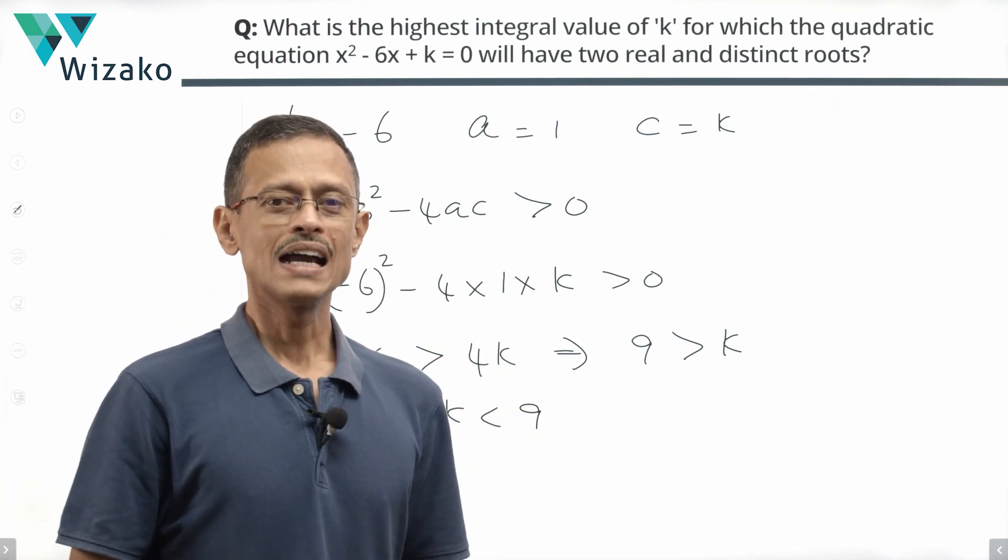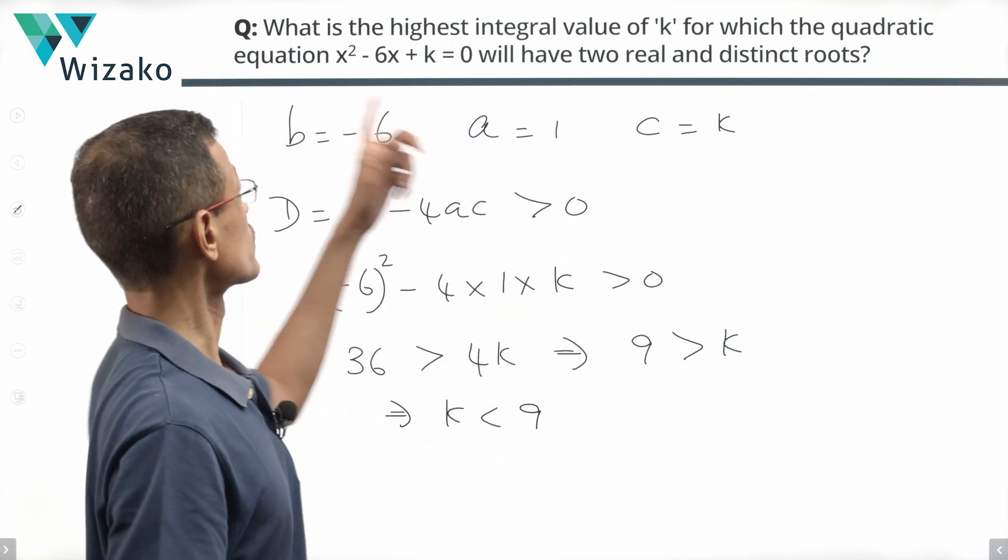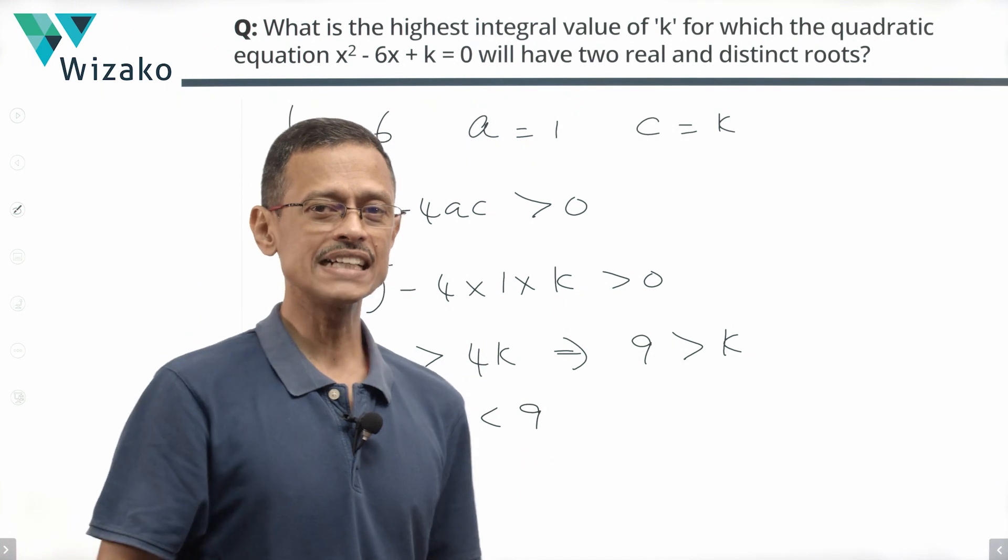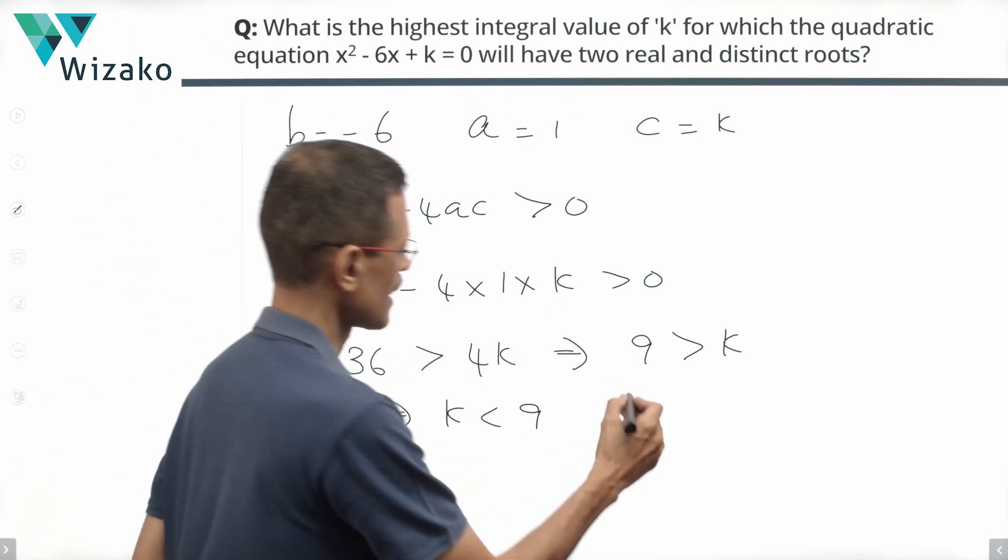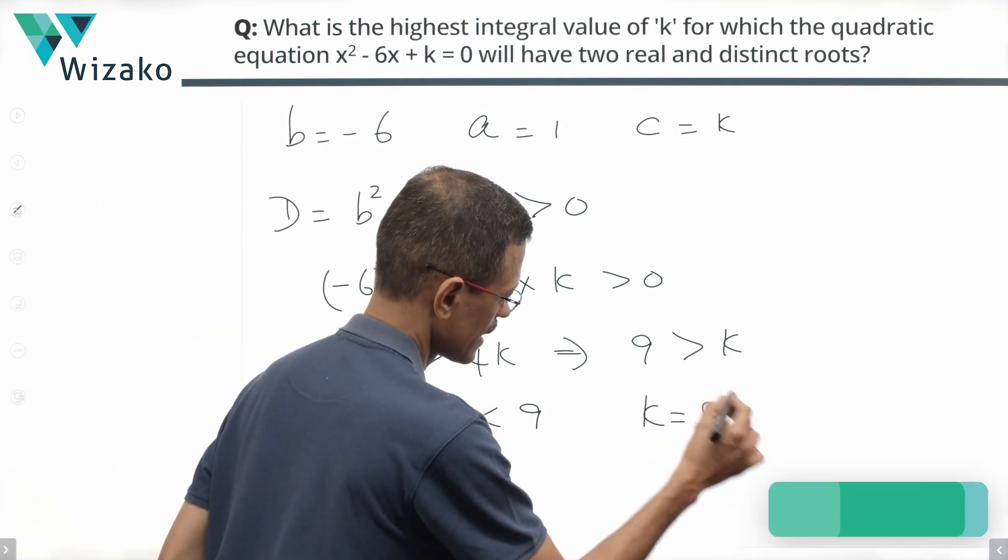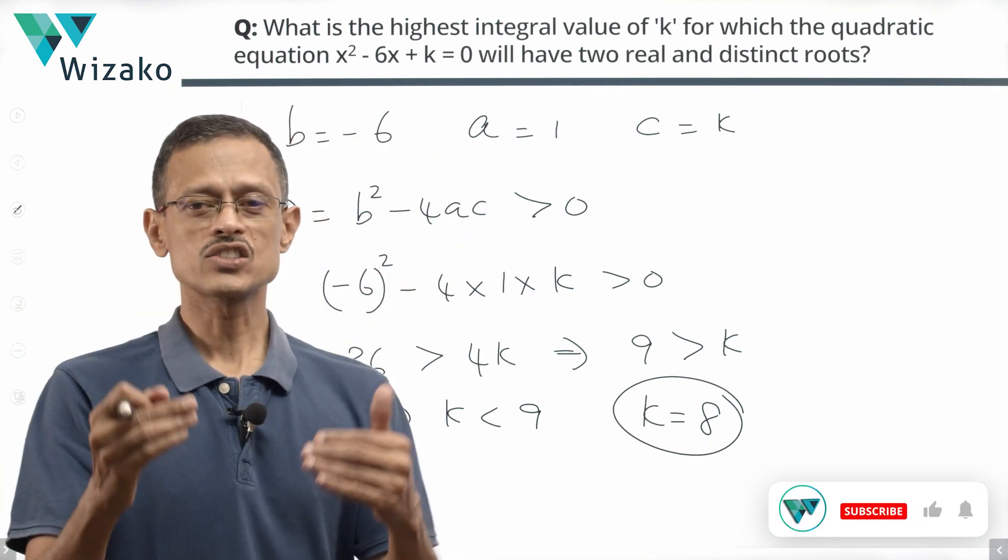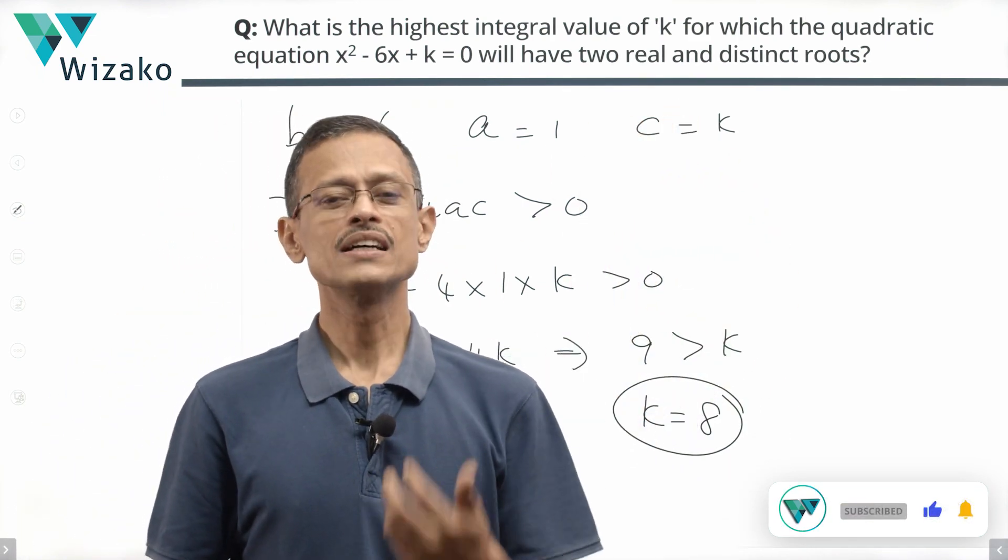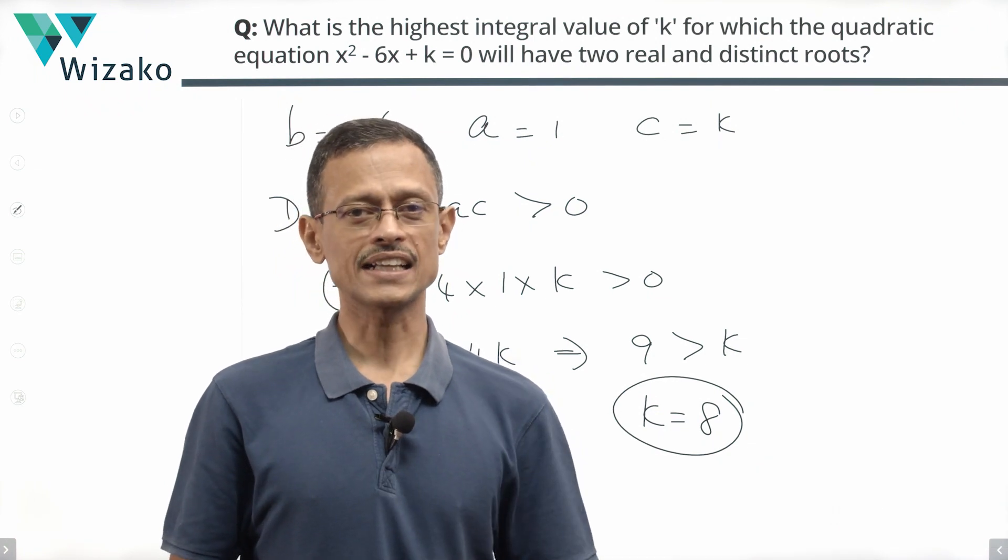k is less than 9 and k is an integer according to the question, what is the highest integral value it can take? So, what is the largest integer that is less than 9? The largest integer that is less than 9 is 8. So, what is the highest integral value that k can take so that the roots of this equation will have real and distinct roots? That is 8. Choice D is the correct answer to this question.